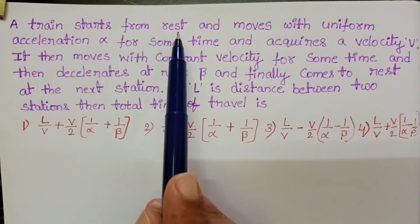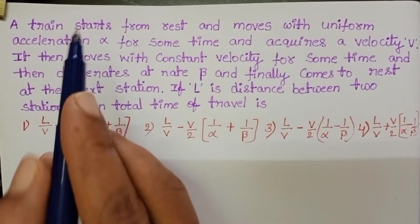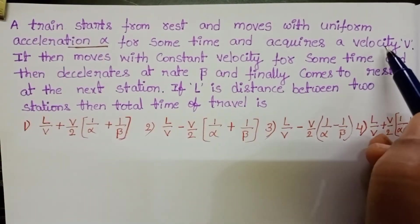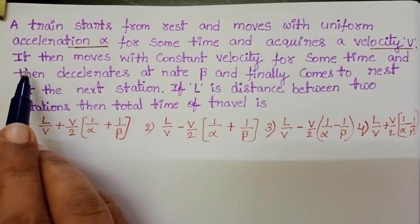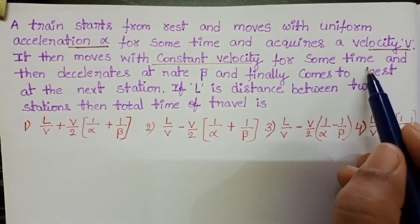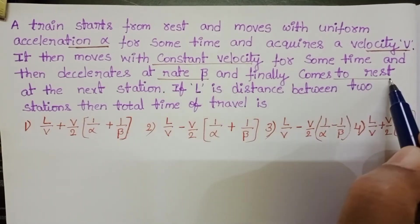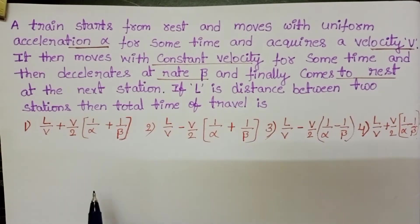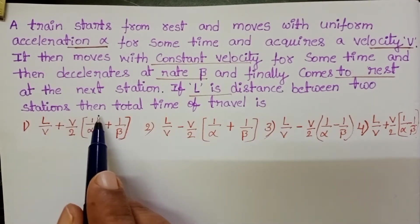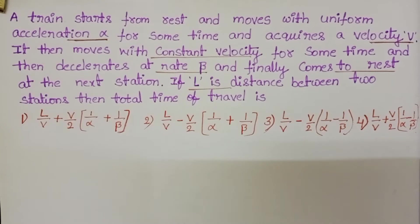A train starts from rest and moves with uniform acceleration alpha for some time and acquires a velocity v. It then moves with constant velocity for some time and then decelerates at rate beta and finally comes to rest at the next station. If L is the distance between the two stations, then the total time of travel is?